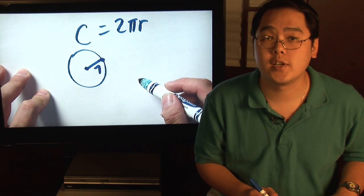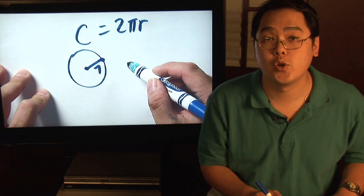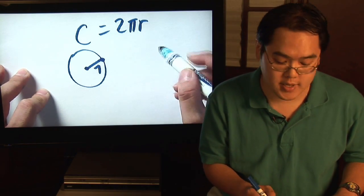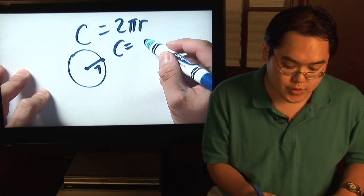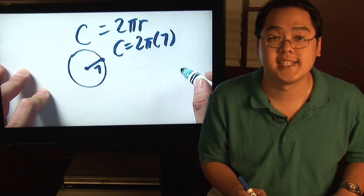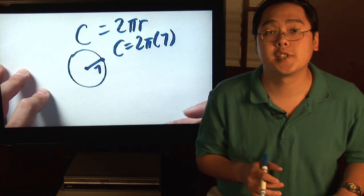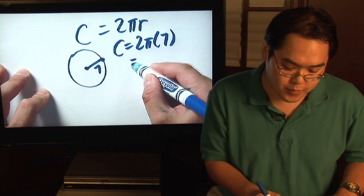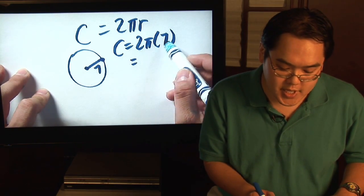Since you already have the radius there, you can just plug it in. So wherever you see the r, just put the 7 in. So you'll get C is equal to 2 pi times r is 7. Since the circumference is a multiplication formula, just multiply across. So 2 pi times 7...